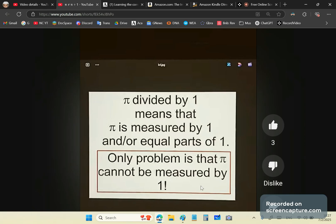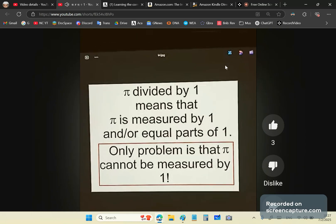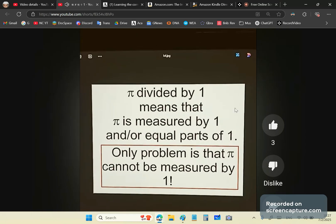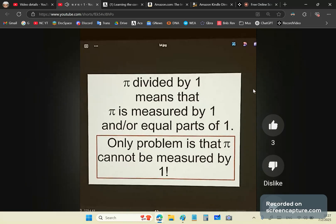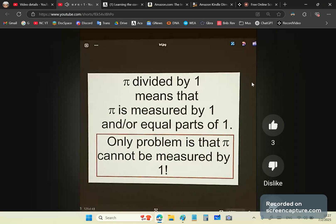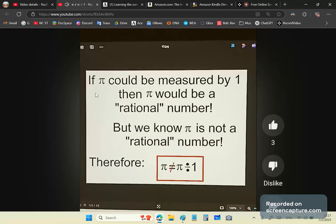So the only problem is that pi cannot be measured by one. Guess what? If you say pi is equal to pi divided by one, you know what you're saying? You're saying that pi is a rational number. Yes, you imbeciles. That's what you're saying.